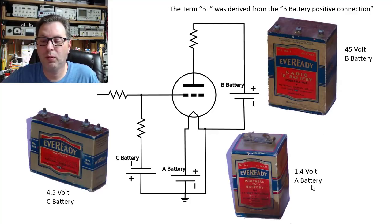And you could actually buy specialized batteries made for vacuum tubes. You can see here this is a 1.4 volt A battery. You can see here this is a 4.5 volt C battery, and this is a 45 volt B battery.